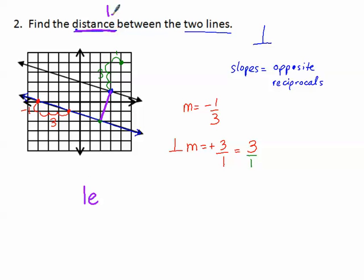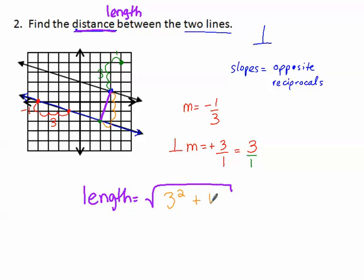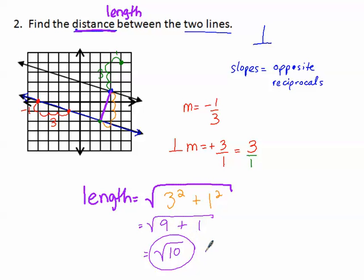For distance, we think length. The length is the square root. Counting the blocks traveled: three over and one up — so that's the square root of three squared plus one squared. Three squared makes nine, one squared makes one, giving the square root of ten. That one doesn't simplify further, so the answer is either the square root of ten, or approximately 3.16 on a calculator.